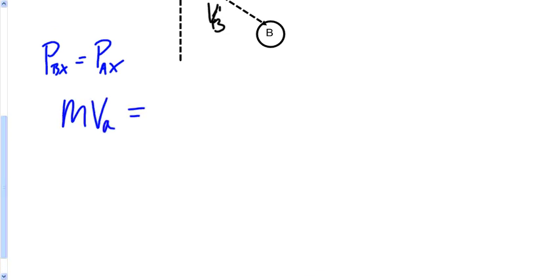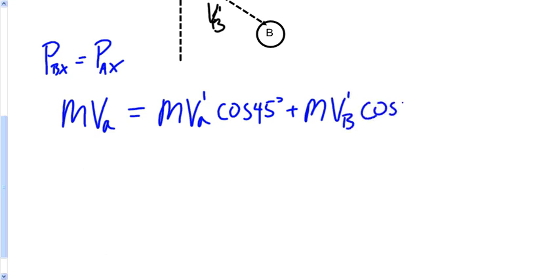And my after is M, the velocity of A afterwards, times the cosine of 45 degrees, plus M, for the second ball, V of B afterwards, cosine of 45 degrees.